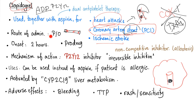Route of administration of clopidogrel is oral (per os). Onset is two hours. It is a prodrug, which means it requires metabolism first in order to become active. The mechanism of action is P2Y12 inhibition, and this is a non-competitive, irreversible inhibitor. If the patient is allergic to aspirin, use clopidogrel. It is activated by the CYP2C19 member of the cytochrome P450 system. Adverse effects include bleeding, TTP, rash, and sensitivity. Drug interactions may involve other inducers or inhibitors of CYP2C19.